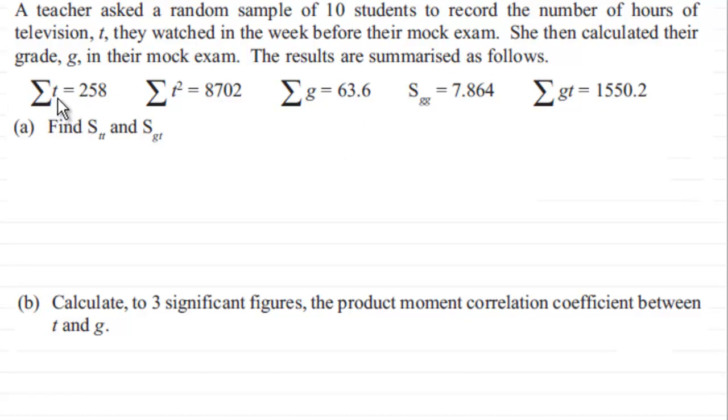So you've got the sum of t which is 258, sum of t squared 8702, sum of g equals 63.6, sgg equals 7.864, and the sum of gt equals 1550.2.